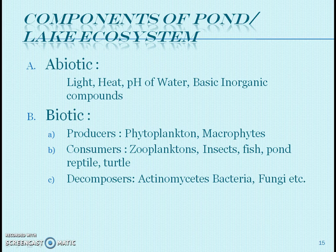Consumers in the pond ecosystem include zooplankton, bacteria, small fish, insects, and large game fish, as well as fish that feed on herbivores. Decomposers are bacteria and fungi. Protozoa are also present in aquatic ecosystems.